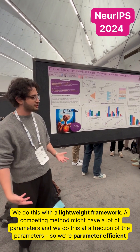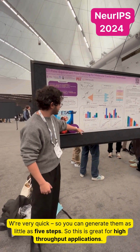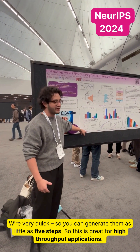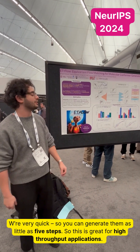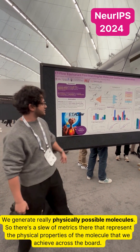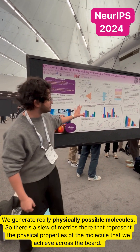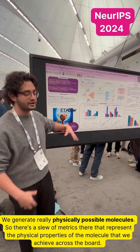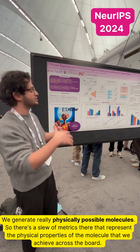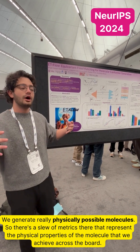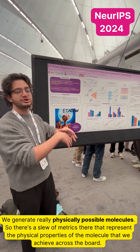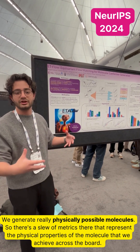So we're parameter efficient and very quick — you can generate conformers in as little as five steps, which is great for high-throughput applications. We generate really physically plausible molecules, and we achieve across-the-board low-energy conformers, which is what our data is about.